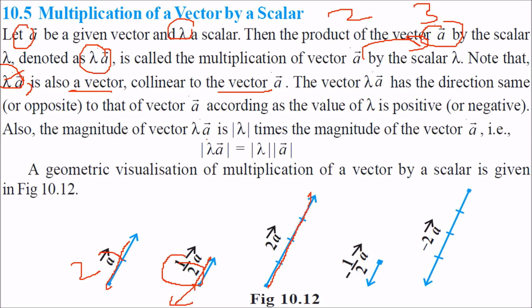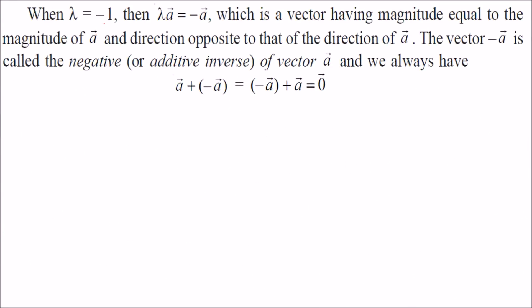The magnitude of vector λa is |λ| times the magnitude of vector a. That is, |λa| = |λ||a|, and these are the magnitudes. These are the geometric visualizations of the multiplication of a vector by a scalar.